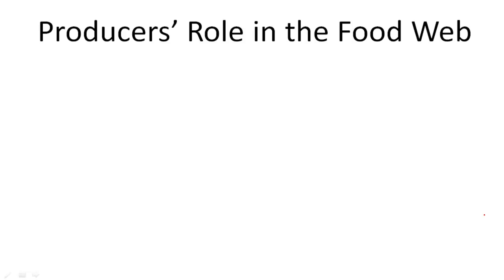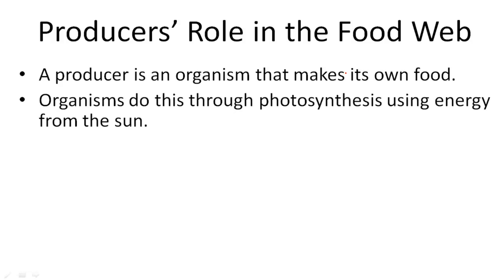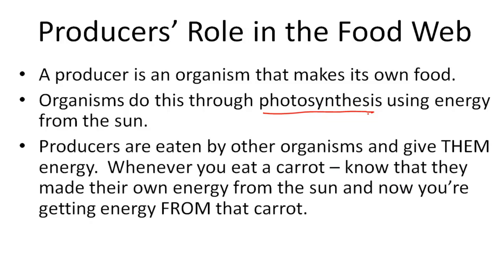There are names for different organisms in a food web. The first one we're going to talk about is called the producer. A producer is an organism that makes its own food — it produces its own food. Organisms do this through a process called photosynthesis, where they use energy from the sun. Producers are then eaten by other organisms and give them energy. Whenever you eat a carrot, know that it made its own energy from the sun, and now you're getting energy from that carrot.